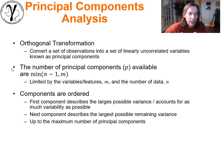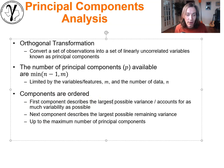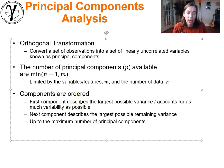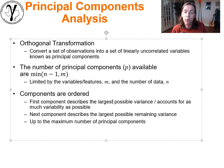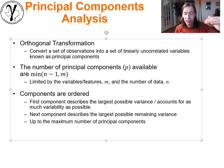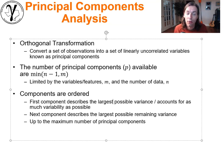The components are ordered. The first component describes the largest amount of variance and accounts for as much variability in the dataset as possible. The next component describes the largest possible remaining variance under the orthogonality constraint. We continue ordering from most important to next most important, right down to the last principal component which describes the least variability.